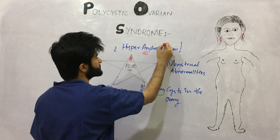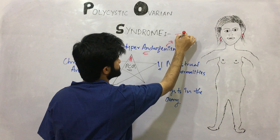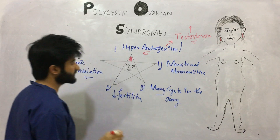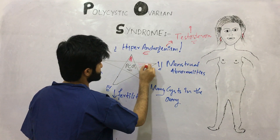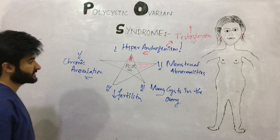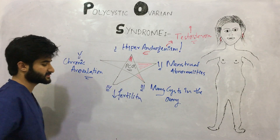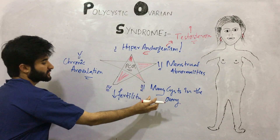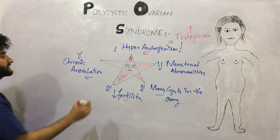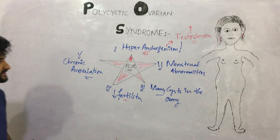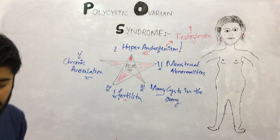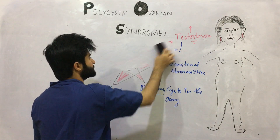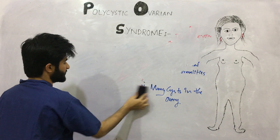So this star is polycystic ovarian syndrome, comprised of hyperandrogenism — meaning androgen amount is increased in the female, for example testosterone is increased — secondly there are menstrual abnormalities, there are many cysts in the ovaries meaning the ovary is polycystic, the fourth is decreased fertility, and the final one is chronic anovulation.